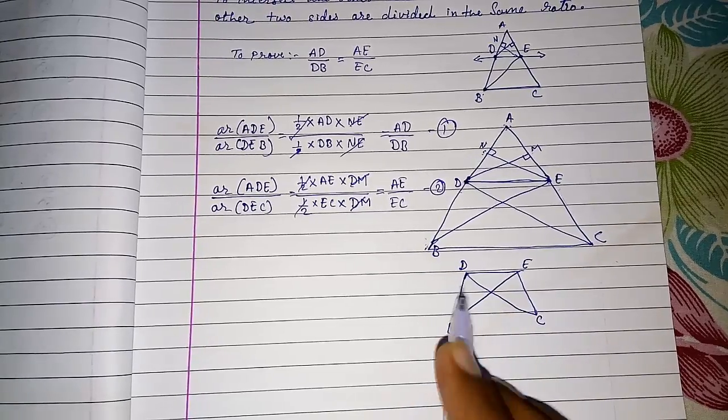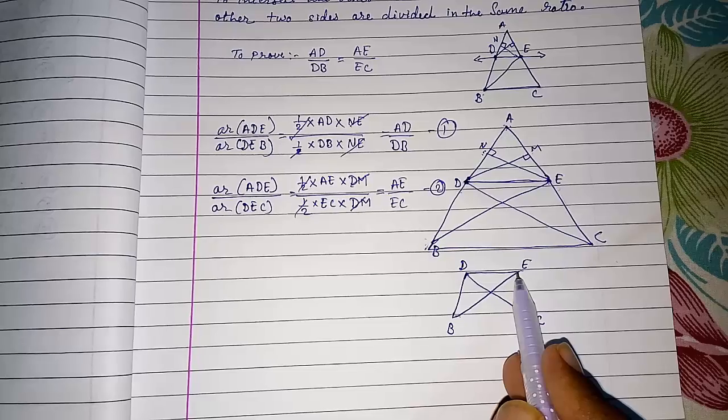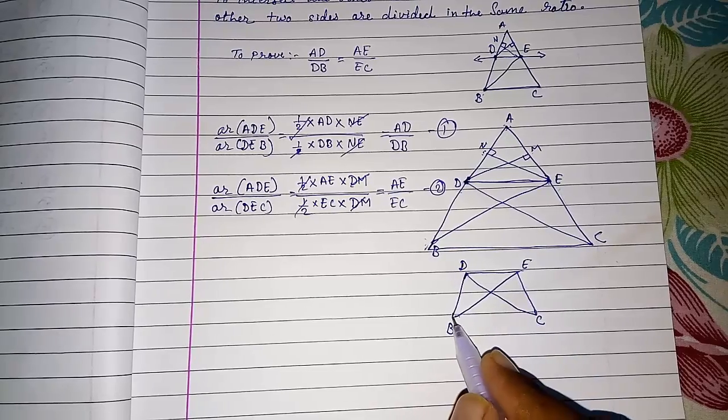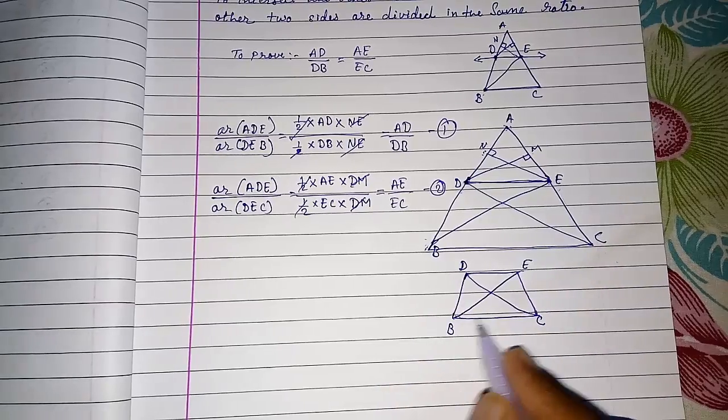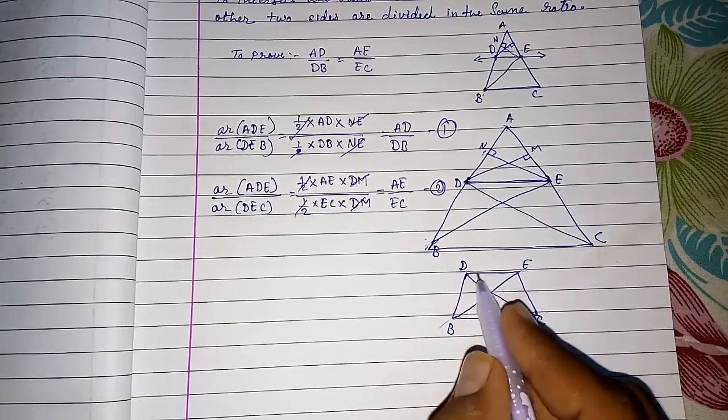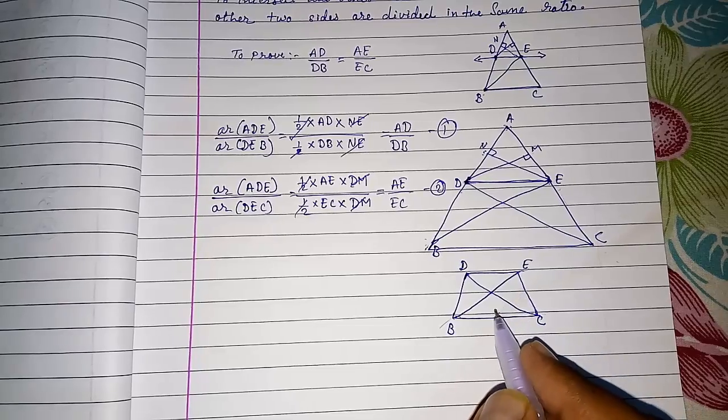Means DE is the base. From that DE only I am drawing one more triangle, DEC. Two triangles having the same base. And if they are between the same parallel, they had only given us that DE parallel to BC.